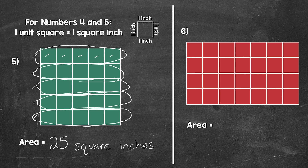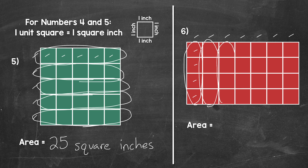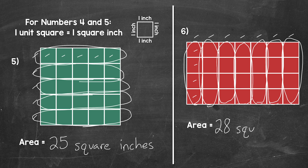Moving on to number six, let's count the unit squares to find the area. Let's switch it up and skip count by the columns. We have one, two, three, four, five, six, seven columns with one, two, three, four squares in each column. We have four, eight, 12, 16, 20, 24, 28. So 28 square inches here — the area of this rectangle is 28 square inches.